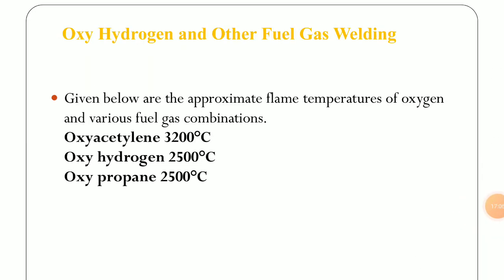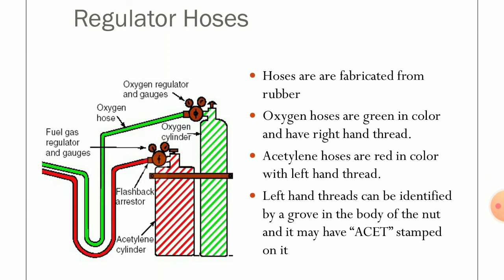Other fuel gas combinations include oxy-hydrogen and oxy-propane. In our previous slides we saw the different fuel gases and their temperature ranges. Hydrogen with oxygen gives 2500°C, whereas propane with oxygen also gives 2500°C. These combinations are helpful for use with a variety of materials. In our next lecture we will see regulators and hoses in more detail — we will stop here today. Thank you.